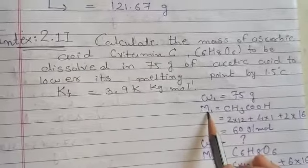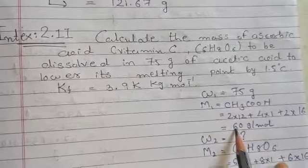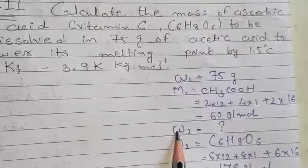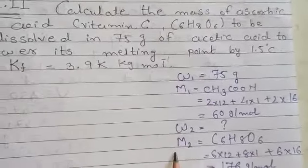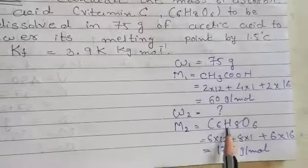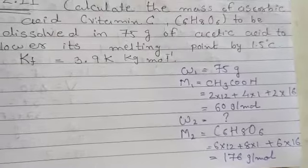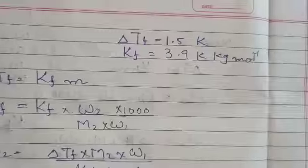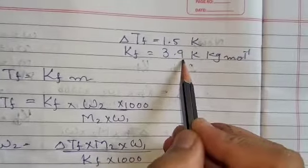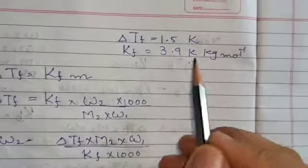Molar mass of acetic acid (solvent) = 60 gram per mole. We need to find the mass of solute. The solute has molecular formula C₆H₈O₆, giving a molar mass of 176 gram per mole. Kf = 3.9 Kelvin·kg/mol.